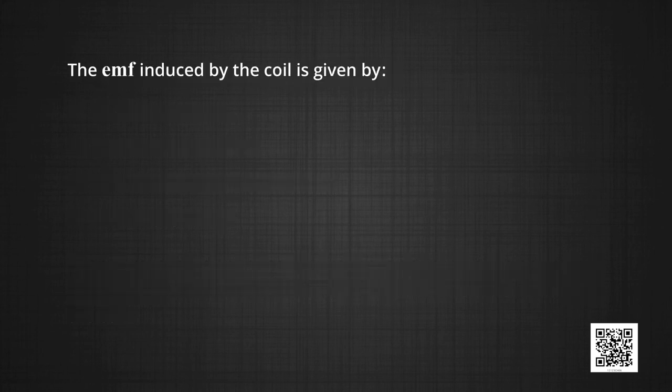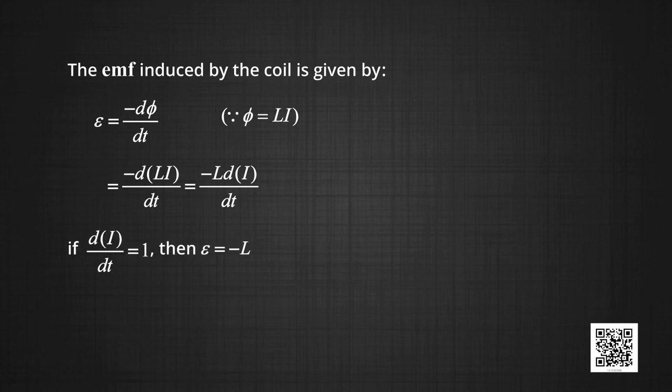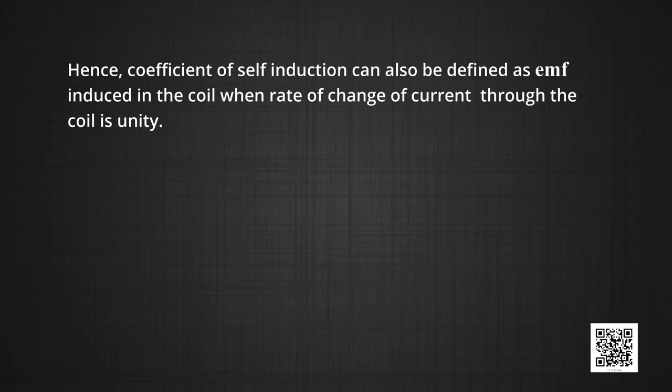The EMF induced by the coil is given by E is equal to minus d phi by dt. Phi as we already know is equal to L into I. Therefore, EMF E is equal to minus d over dt of LI equal to minus L di by dt. If di by dt is equal to 1, then the induced EMF E is equal to minus L. Hence, coefficient of self-induction can also be defined as EMF induced in the coil when rate of change of the current through the coil is unity.